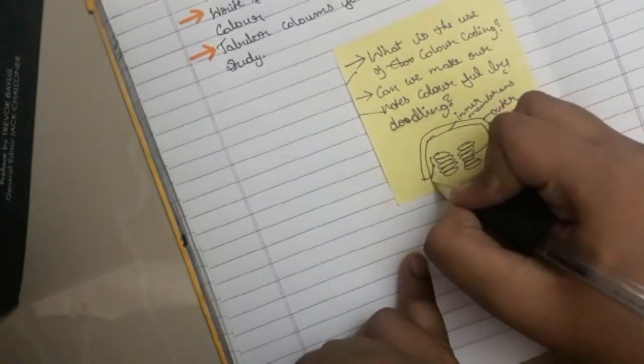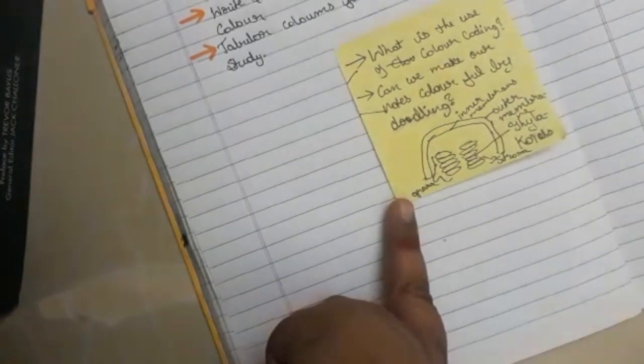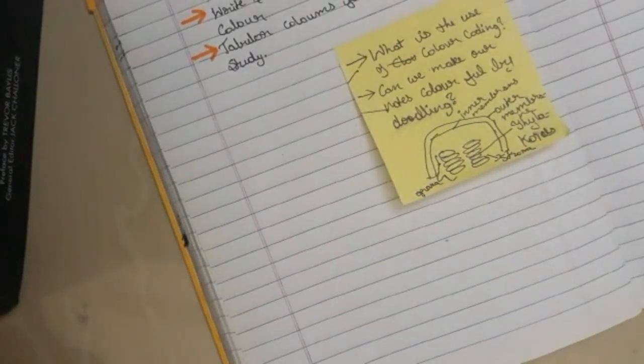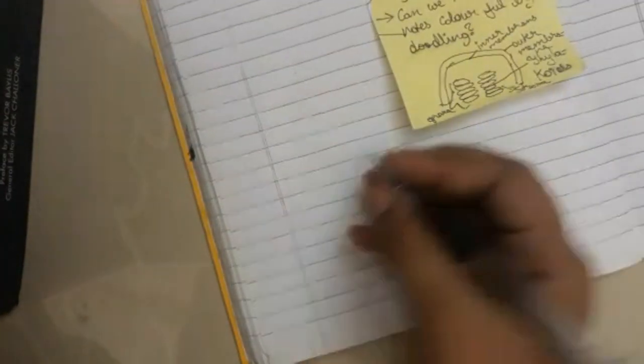You can just write the definition of the particular term in the diagram and what's the use of it. That's all, no need of explaining it.